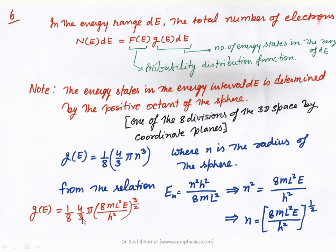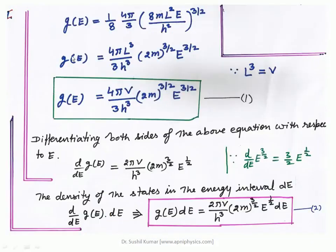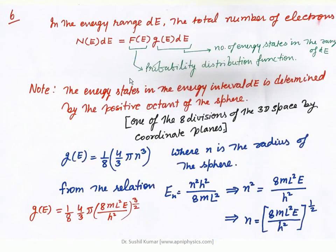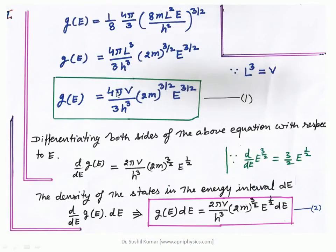G(E) = (1/8) × (4/3)π × N³, substituting the value of N. By this way one can find out the total quantum states. After simplifying using the assumption L³ = V (volume), G(E) = (4πV / 3h³) × (2m)^(3/2) × E^(3/2). G(E) defines the quantum states — available quantum states defined with the help of an octant of this sphere, where all points have positive values.